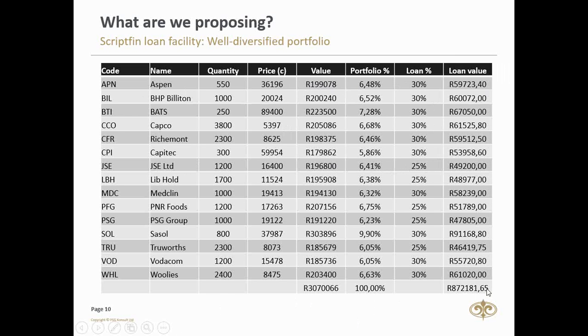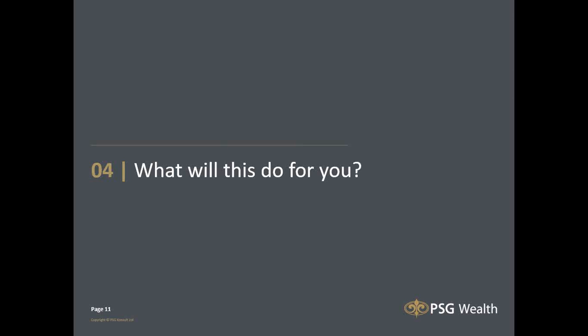Bottom line: you can borrow R872,000 out of your share portfolio to use for whatever purpose. We're proposing that you apply for the ScripFin, those of you that need the cash. It's not only about needing cash for emergencies — it's about working smarter with your money, converting your existing share portfolio and using it as collateral, using other people's money to build your wealth.